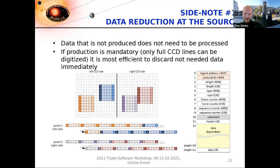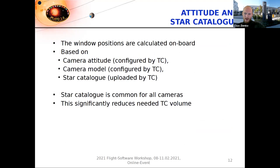In order to upload 300,000 windows per camera — so 300,000 times 24 after each 90-degree roll — it would require quite a big uplink bandwidth. To avoid that, it was decided to calculate the window positions on board. What you need for that is a camera attitude configured by telecommand, a camera model also configured by telecommand including CCD location and focal length parameters, and a star catalog of the apparent positions of the stars. If you have all of that, you can calculate the window positions on the CCDs. The star catalog is common for all cameras, saving a significant amount of uplink bandwidth.